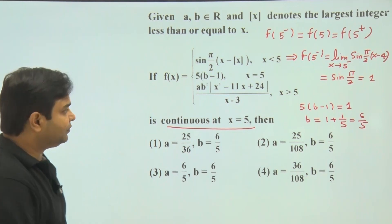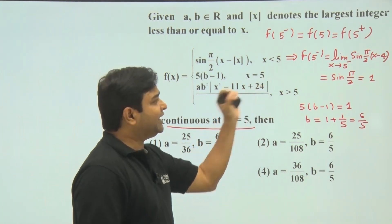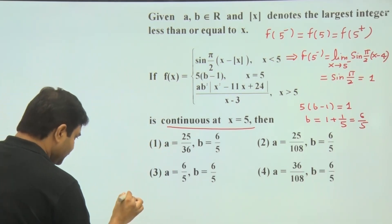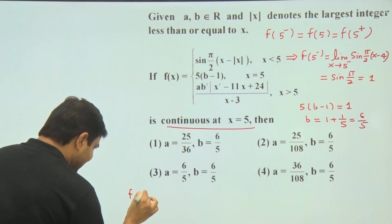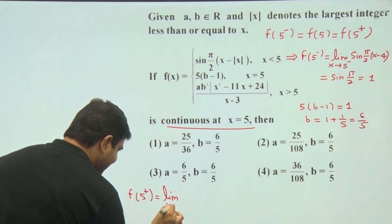So b is 6/5. Now find out RHL. For RHL we have to calculate f of 5 plus, this will be limit x tending towards 5 plus.